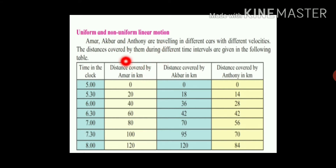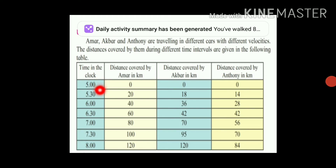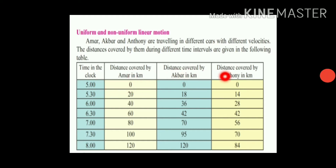To understand this concept, one example is given. Amar, Akbar and Anthony are three friends travelling in different cars with different velocities. The distance covered by them during different time intervals is given as follows. They start travelling at 5 o'clock, and we measure the distance travelled after every half hour. In the first 30 minutes, from 5 to 5:30, Amar travelled 20 km.